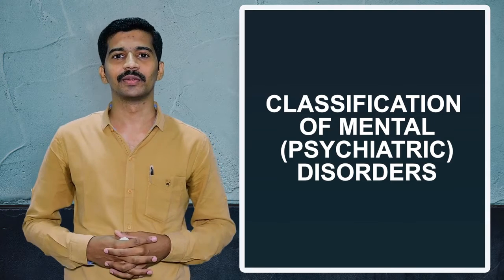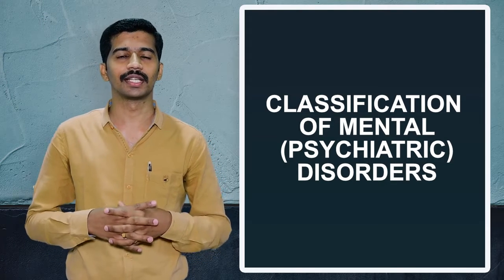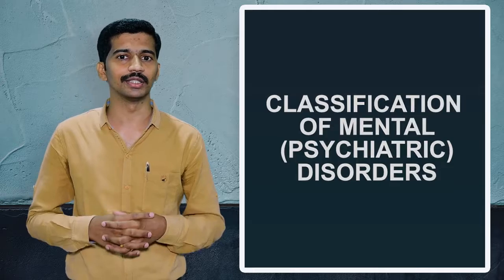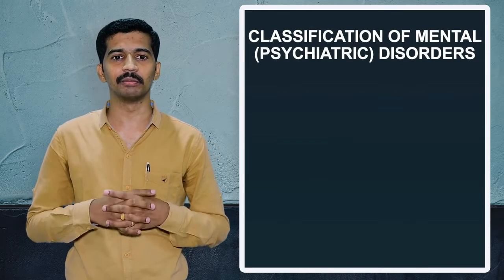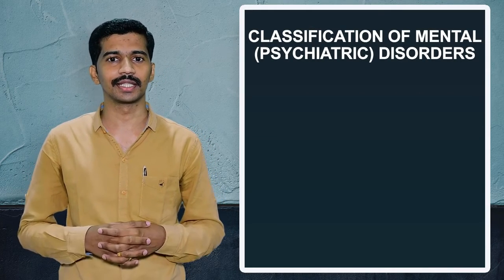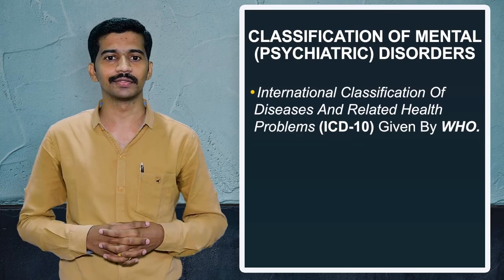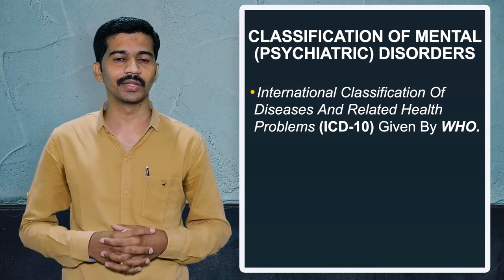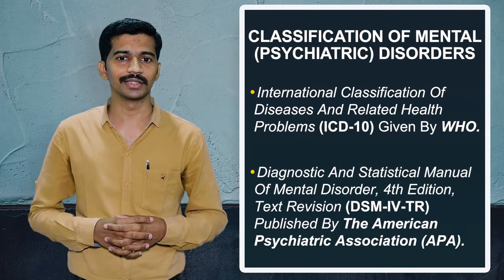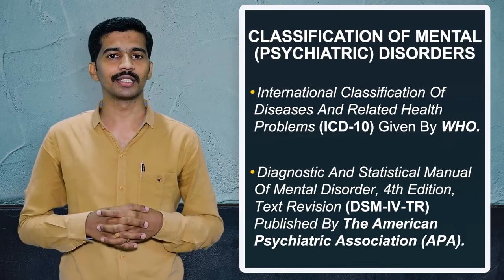Hi everyone. Today we are going to see an important topic from psychiatric nursing — the classification of mental disorder. There are two main important classifications for psychiatric disorder. The first one is ICD classification, which is given by WHO, and the second one is DSM classification, which is given by the American Psychiatric Association.